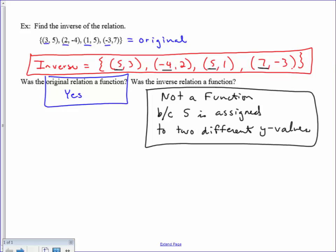Look back at the original function and notice that we had two y values that were repeated. That doesn't affect the original being a function. However, when we reverse the x and y values, that guarantees that the inverse will not be a function.